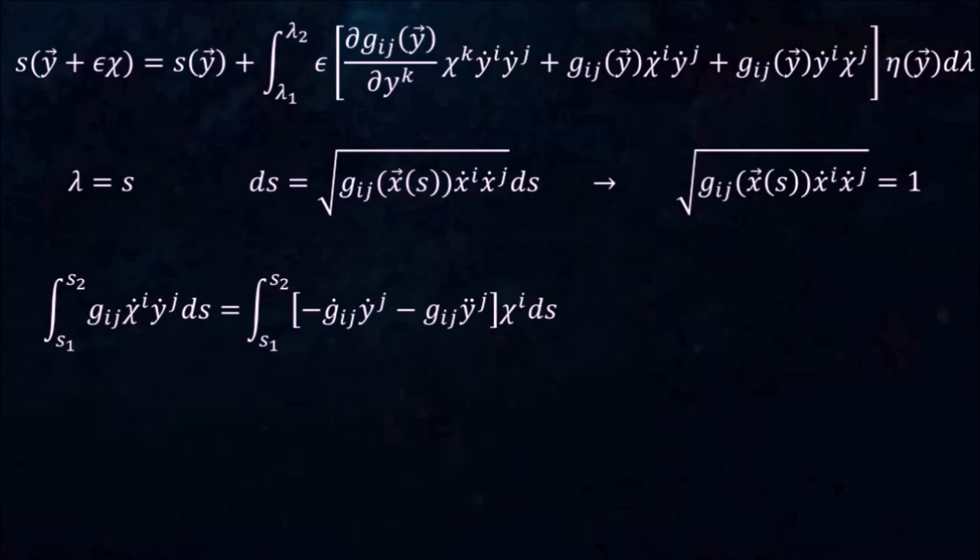Repeating the same procedure for the second term yields this expression. Inserting these back into the original integrand, we end up with chi multiplying every term.